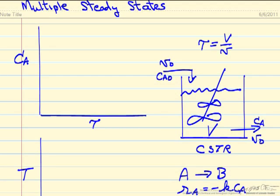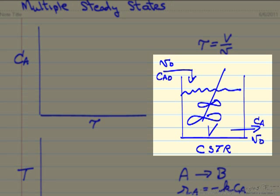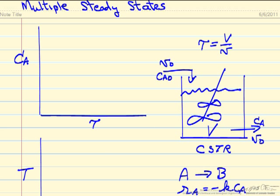We will explain multiple steady states and how they arise for a simple system, a continuous stirred tank reactor operating at steady state, and some of the notation.